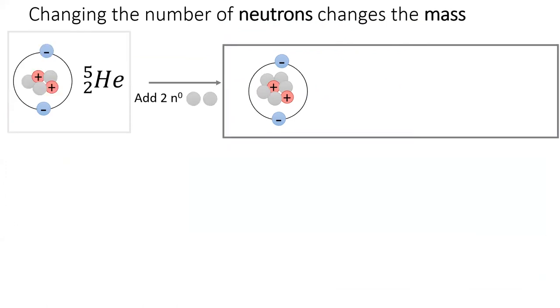If we add two neutrons to an atom, we will increase the atom's mass by two, also increasing the atom's mass number.